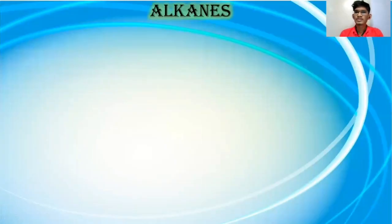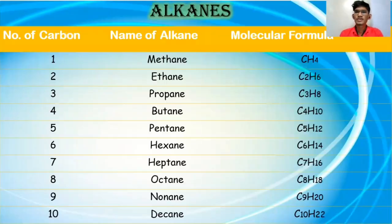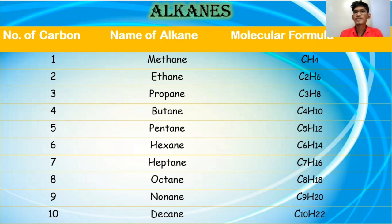Now we'll see about the alkanes. On your screen you can see a table consisting of three columns. In the first column you can see number of carbons, second column the name of an alkane, and the third column is the molecular formula.